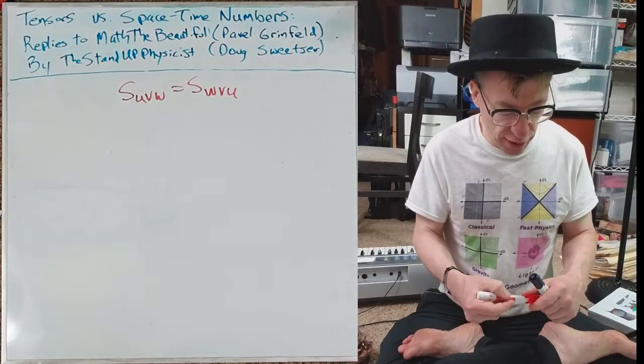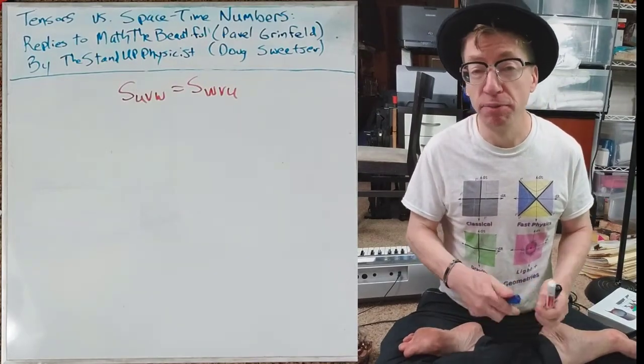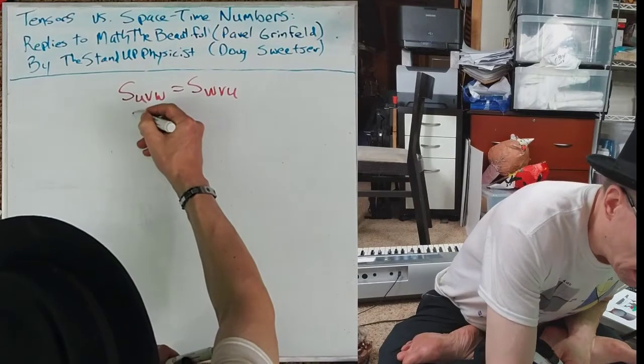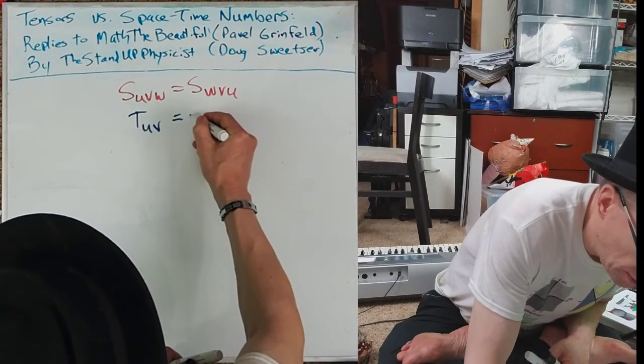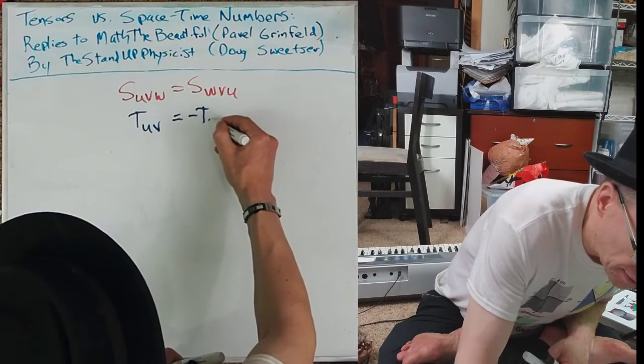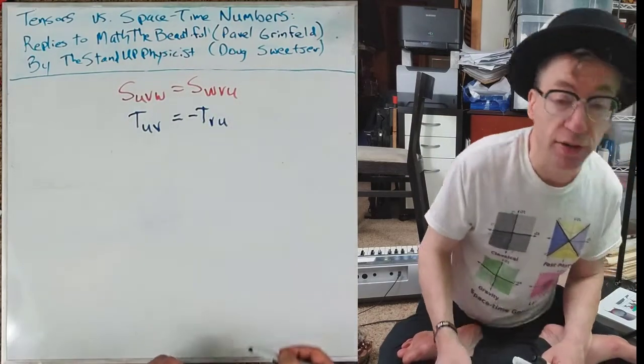And what then is an anti-symmetric tensor? And I bet viewers of this video already know the answer: t, u, v. Switch those around, and you're going to have to toss in a minus sign, but otherwise, they're the same.